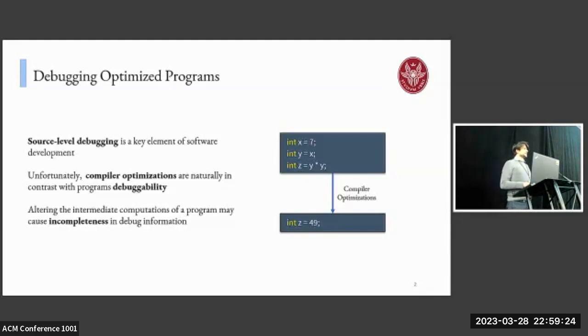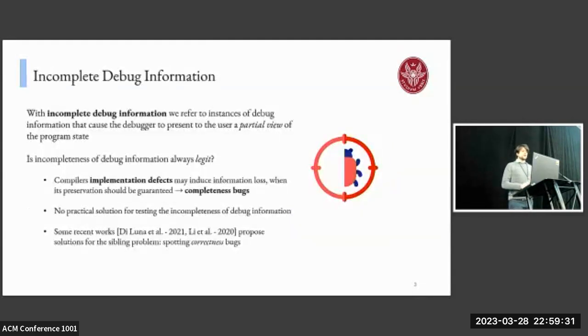This introduces the problem of incompleteness in debug information. With incomplete debug information, we refer to instances of debug information that cause the debugger to present to the user only a partial view of the whole program state. In this work, we focus our attention on the availability of source level variable values. While optimization may legitimately optimize out some variables, isn't incomplete debug information always legit? The answer is no. It may happen that due to some compiler implementation defects, the information loss may affect program points where preservation should instead be guaranteed, and we refer to this situation as a completeness bug.